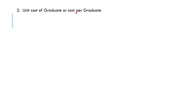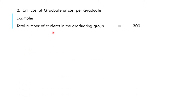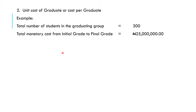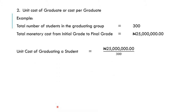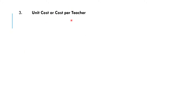Now let's look at the unit cost per graduate, or cost per graduate. The number of students in the graduating group is 300 — those are the outputs graduating. The monetary cost for this graduating group was 25 million naira. The unit cost will be 25 million divided by 300, which means for each graduate, 83,333 naira was spent.